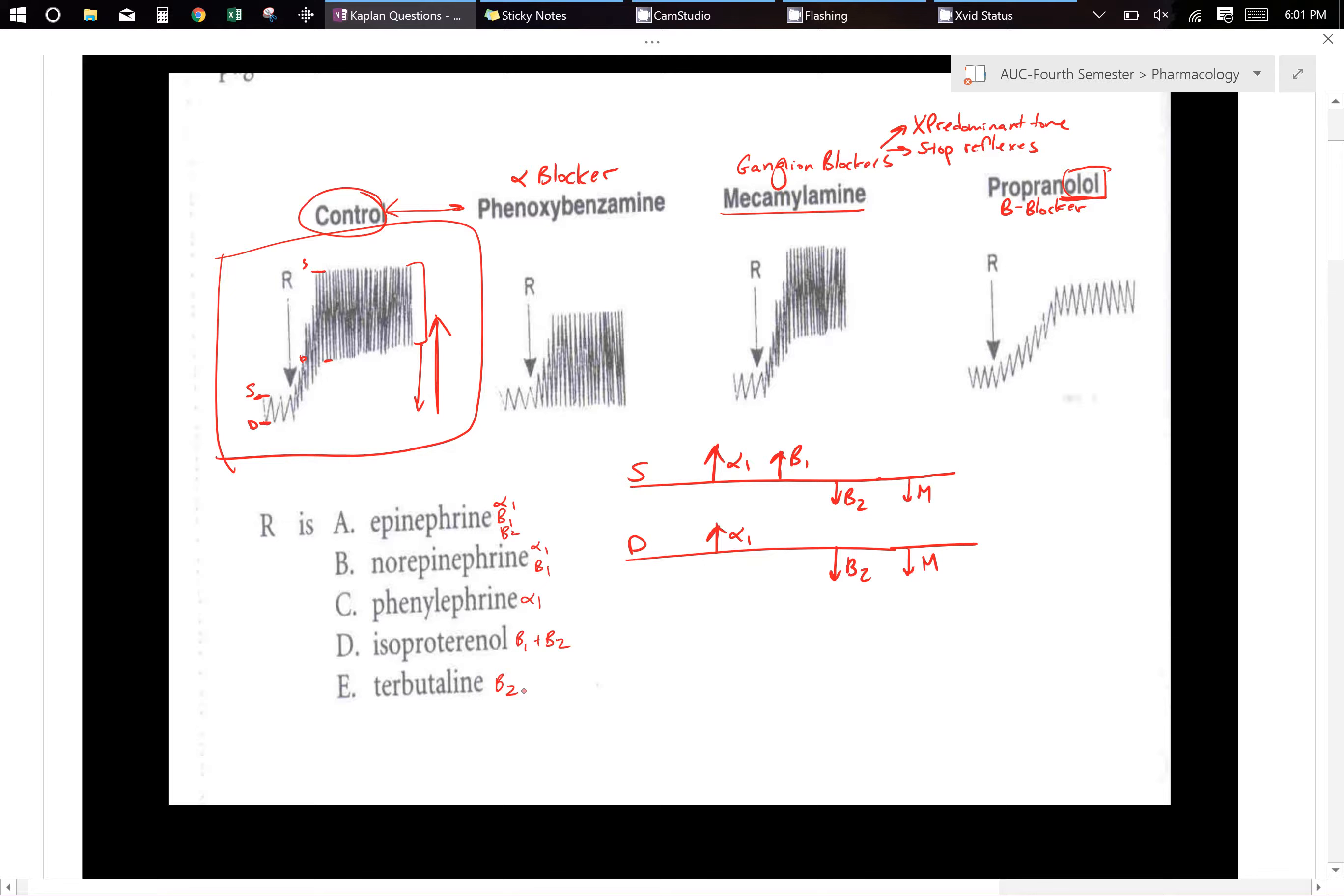All right. So we know that it can't be isopraterenol, it can't be terbutaline because phenoxybenzamine is alpha 1 blocker. So it has to be within A, B, and C.